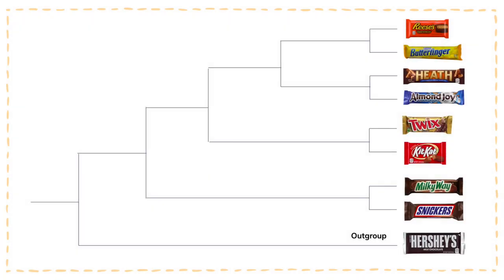In our tree, our outgroup is the Hershey bar, a plain milk chocolate bar. It diverged earlier than all the other chocolate bars. This makes sense because the bar is simply made of chocolate and contains nothing else. It's still good, though.